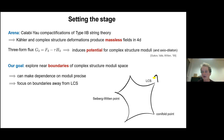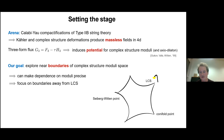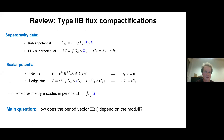One of the things I want you to take away is that when we go to the boundary, we can make this behavior very precise. A well-studied boundary in the literature is the large complex structure point, where we can use mirror symmetry and phrase things in terms of intersection numbers. But maybe physics is even more exciting when we go to other points in the moduli space, as you'll see in a couple of minutes.